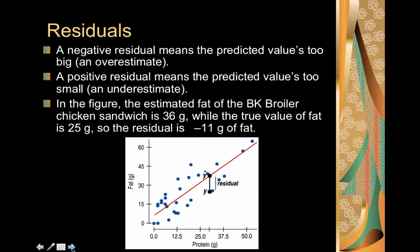In the figure, we're looking at the estimated fat for the Burger King broiler chicken sandwich, which is 36 grams of fat, where the true fat is 25 grams. So the residual ends up being 25 minus 36, or negative 11, and that's what we see right here. This black line shows our residual. Our predicted value comes from our line, which is the red line, and our y value is just from our actual data point. The distance in between those two points is your residual.